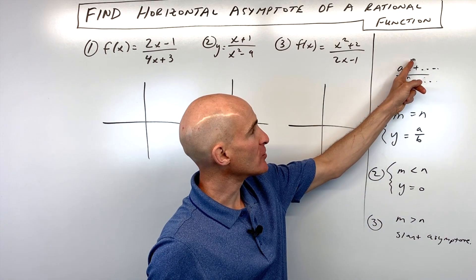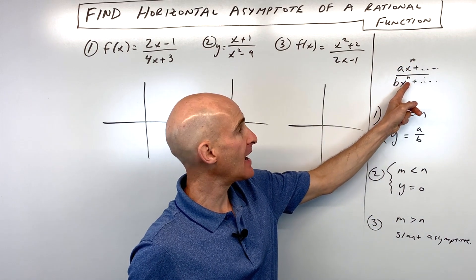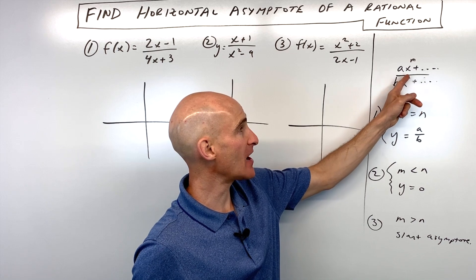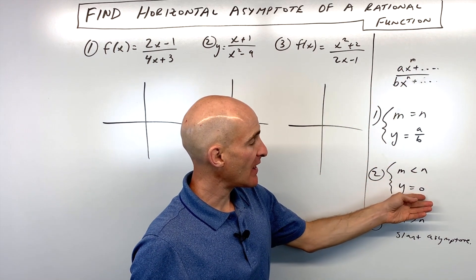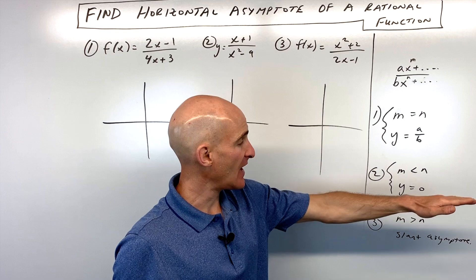But say that this exponent in the numerator is smaller than the one in the denominator, or you could say the one in the denominator is greater than the one in the numerator, either way, then the horizontal asymptote is going to be y equals zero. It's going to be right at the x-axis.